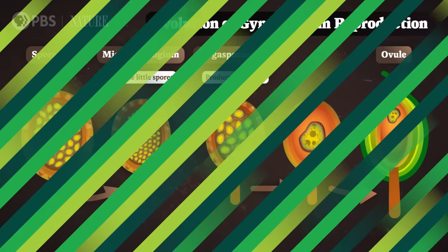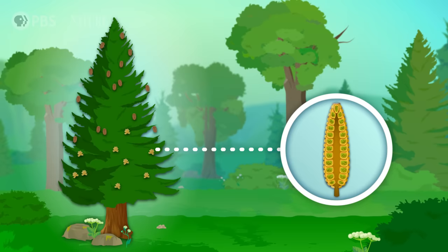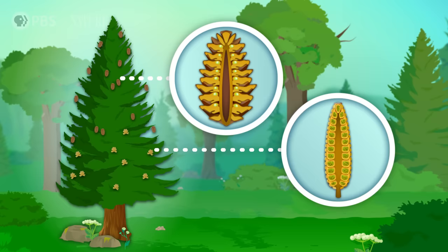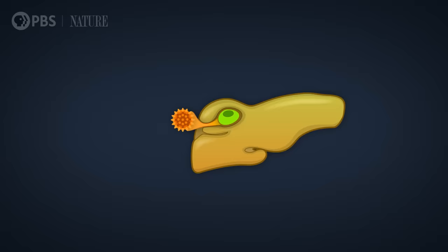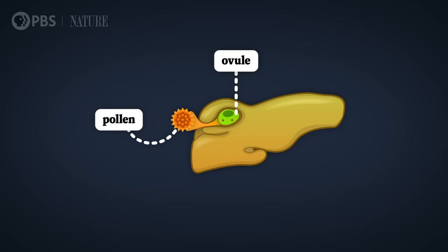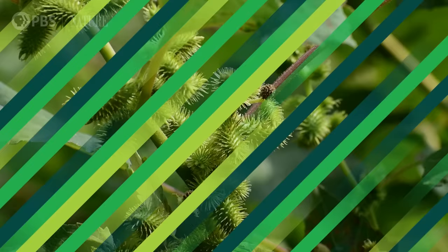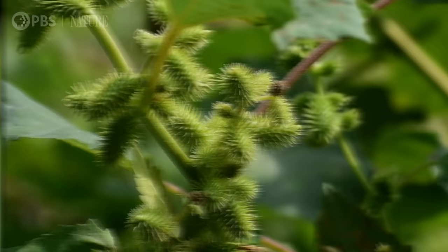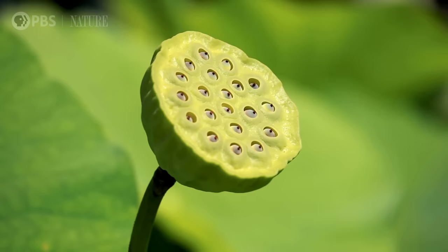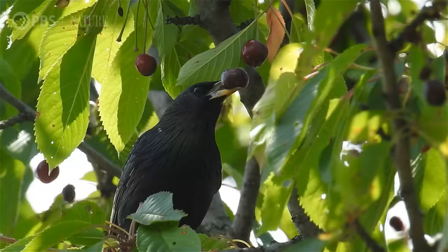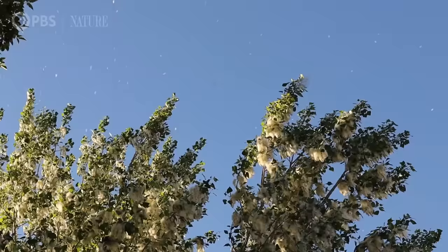There's the sporangium that makes little spores — these become pollen, which produces sperm. And there's the sporangium that makes a big spore. This spore transforms into the next generation of the plant and then produces an egg. When pollen lands on an ovule, it sends its sperm down a little tube to fertilize the egg. Inside the ovule, the fertilized egg grows into an embryo, which will eventually become a baby plant. And once it contains an embryo, the ovule graduates into a seed.